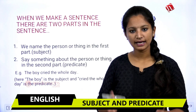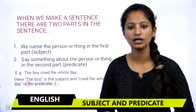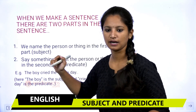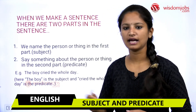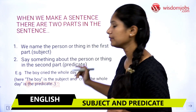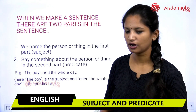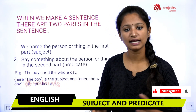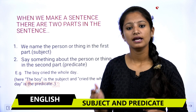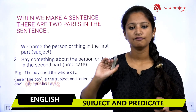Generally, when we make a sentence, there are two important parts in the sentence. In the first part, we name the person or thing we are talking about. When we name the person or thing in the first part, that is called a subject.